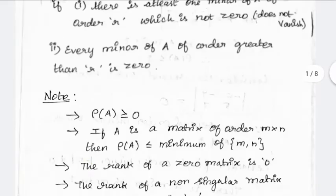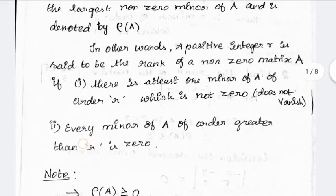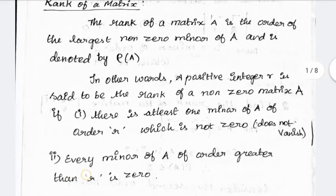This is the definition of rank of the matrix. The rank is the order of the largest non-zero minor of A — that is, the largest non-zero minor of A.